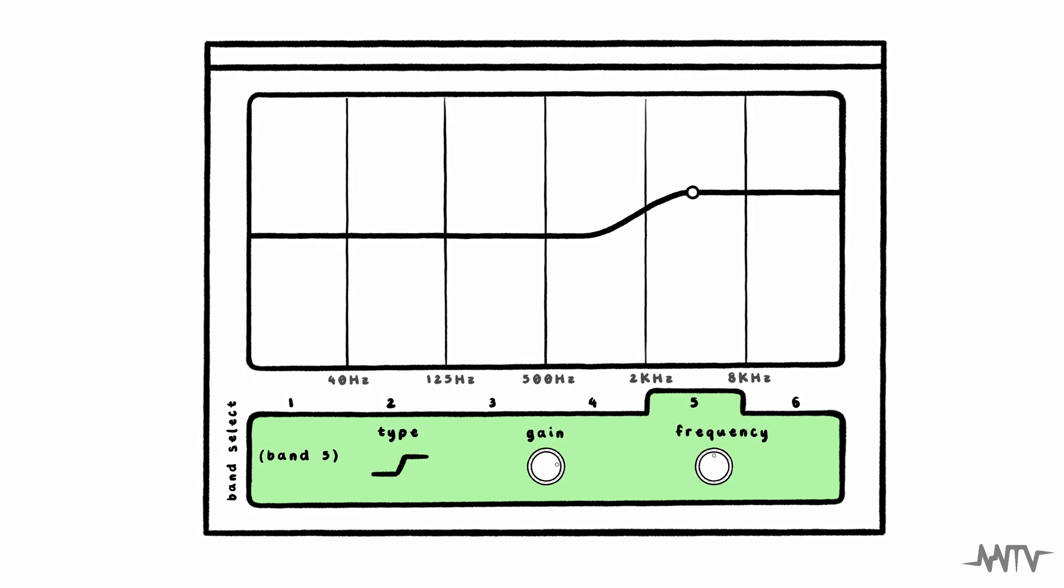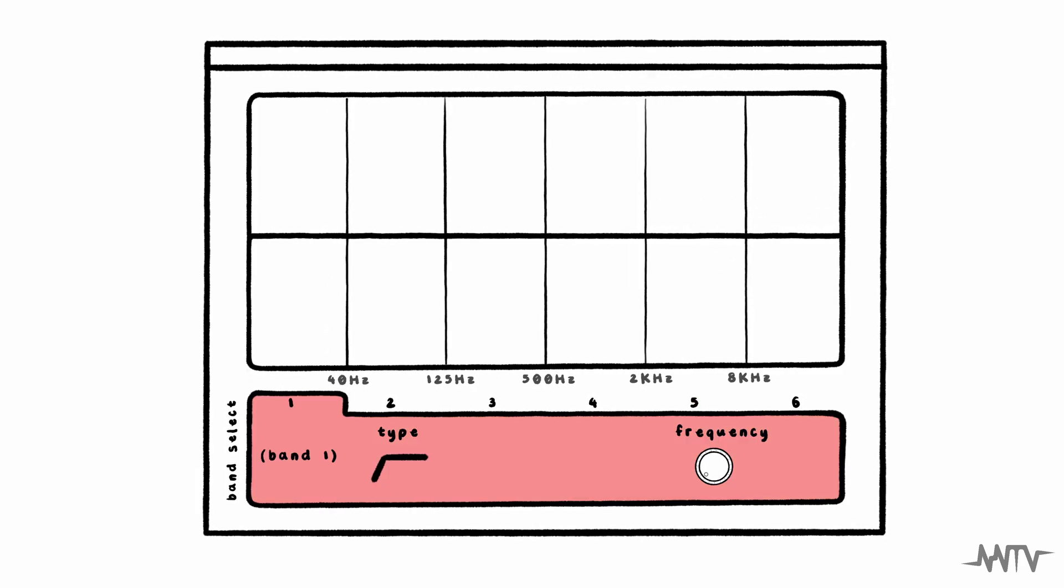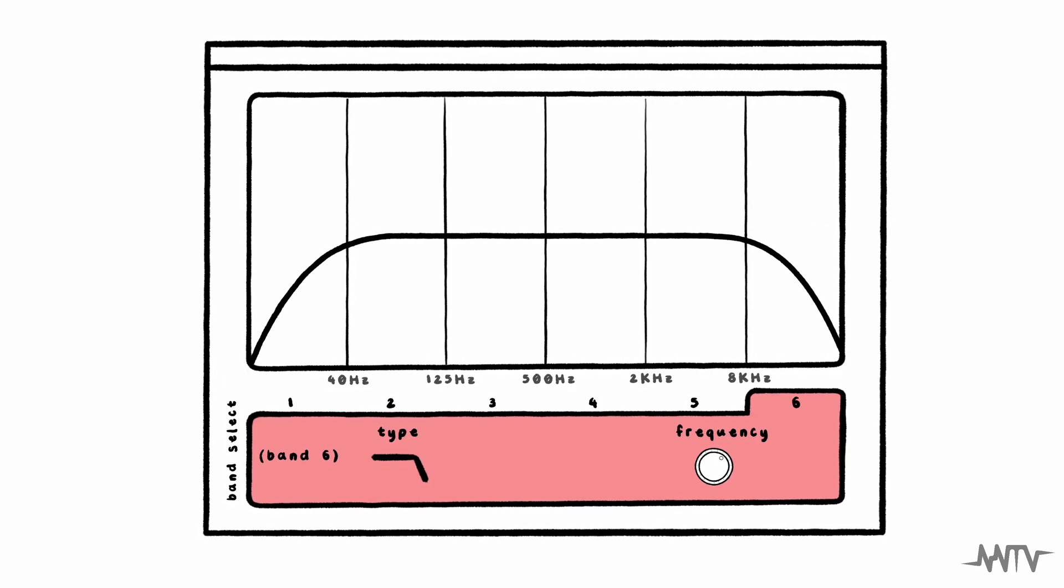Lastly, we have our cut or pass bands. A low cut or high pass filter will eliminate everything below our center frequency, and a high cut or low pass filter will eliminate everything above our center frequency. These have a multitude of creative and practical uses, from simple audio cleanup to complex sound design.